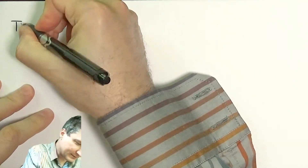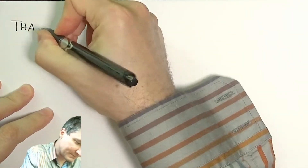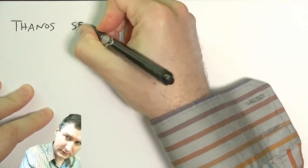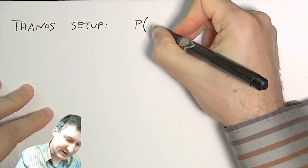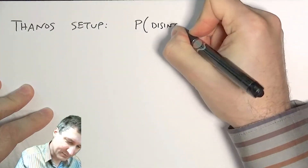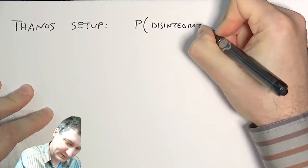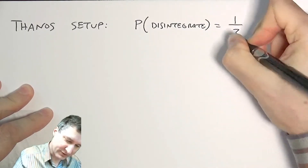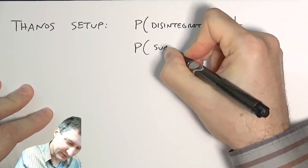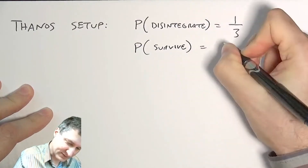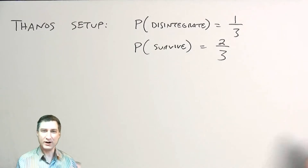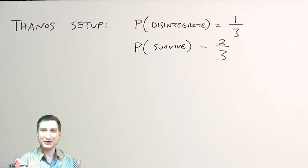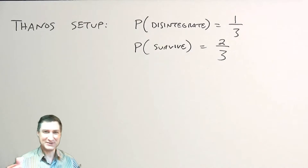Here's the setup. We're going to say that the probability that on a given snap a person disintegrates is equal to one-third, and the probability that they survive is equal to two-thirds. So this is a little more generous than Infinity War, where basically half of everyone died. Here, a third of everyone dies and two-thirds survive.